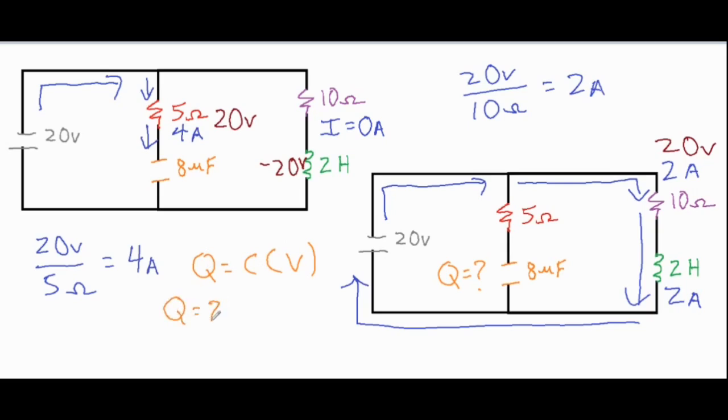So the Q equals 8 microfarads times the 20 volts, which then means that it would have a charge of 160 micro coulombs when everything is all said and done for its charging process.